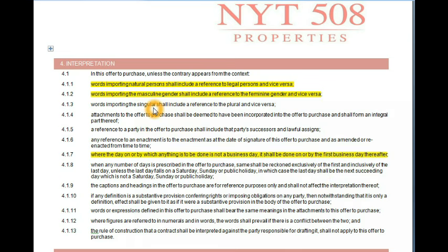We are talking interpretation. Some important words: the word 'natural person' shall also include a legal person — in other words, in the offer to purchase, words including a natural person will also include trusts and companies. Words including gender, which means female, will also include male and vice versa. And where people are married, it will also include the other spouse, especially if they are married in community of property.